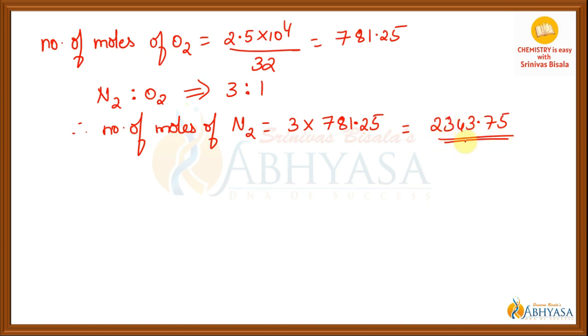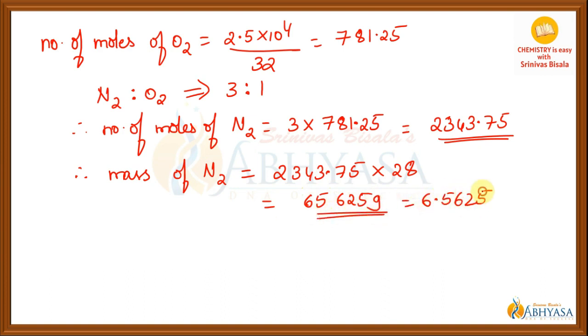Now, convert the moles of nitrogen into mass of nitrogen. So, how you will convert moles into mass? Simply multiplying by molecular mass. So, 2343.75 multiply with 28. And this value is nothing but 65,625 grams. And this one I will write it as 6.5625 into 10 to the power of 4 grams.